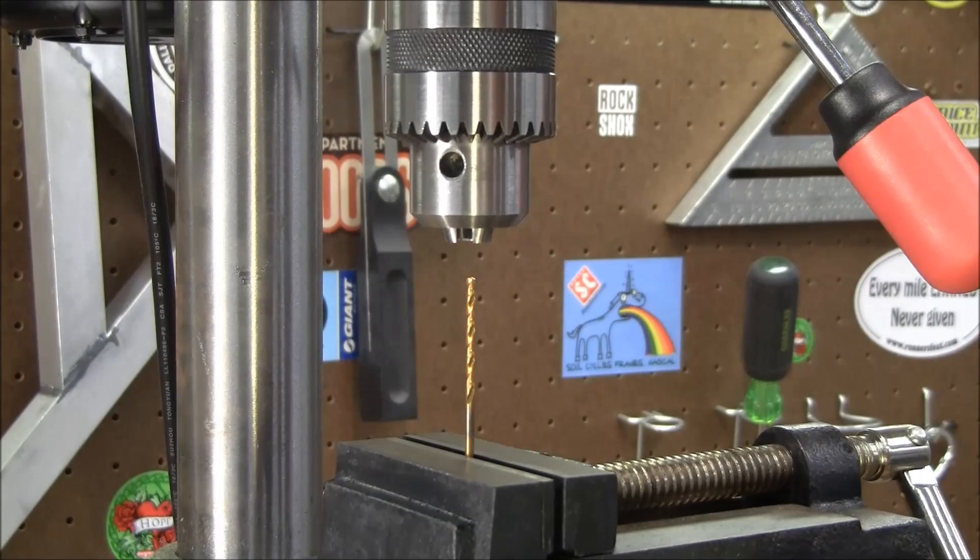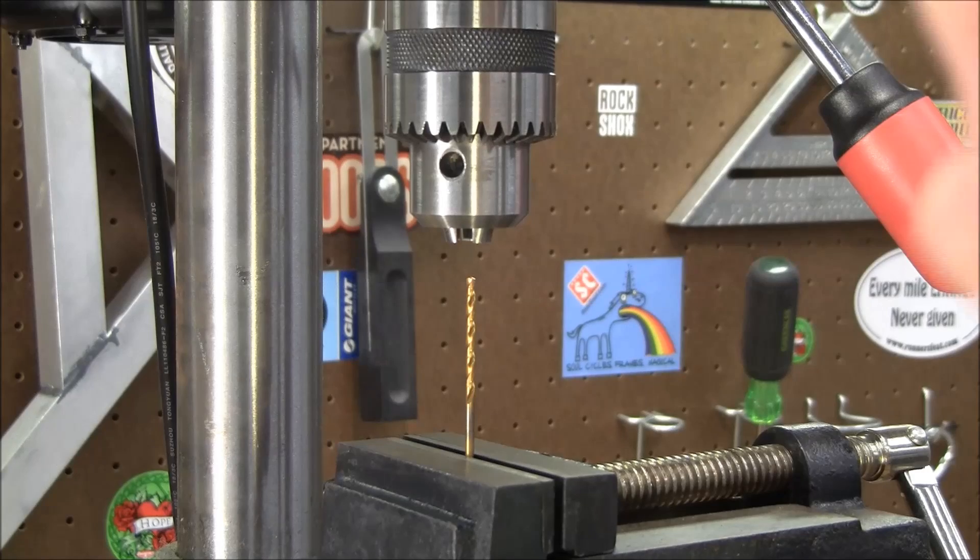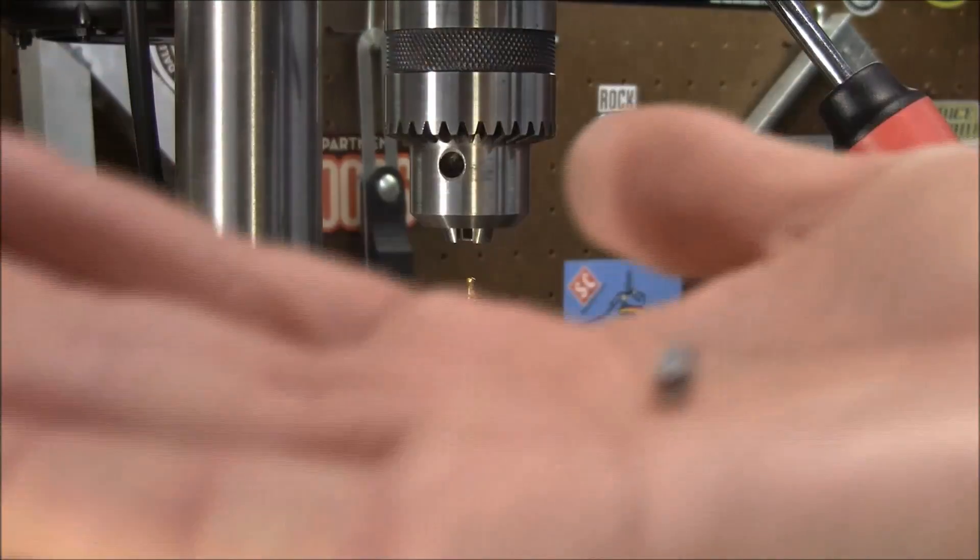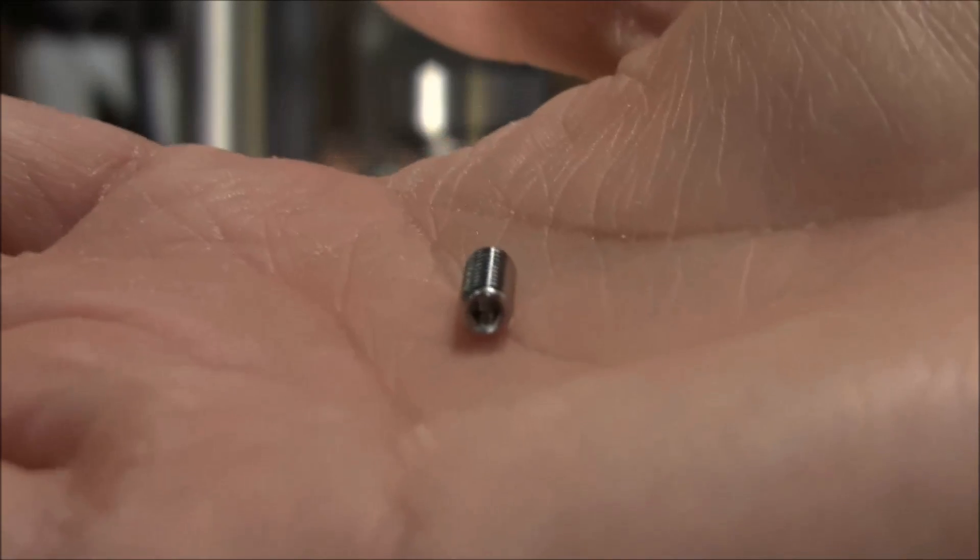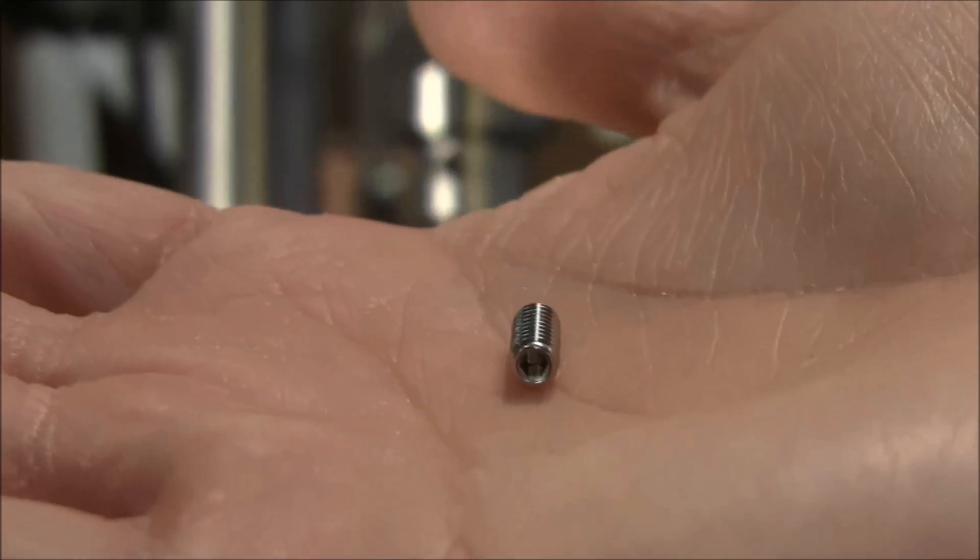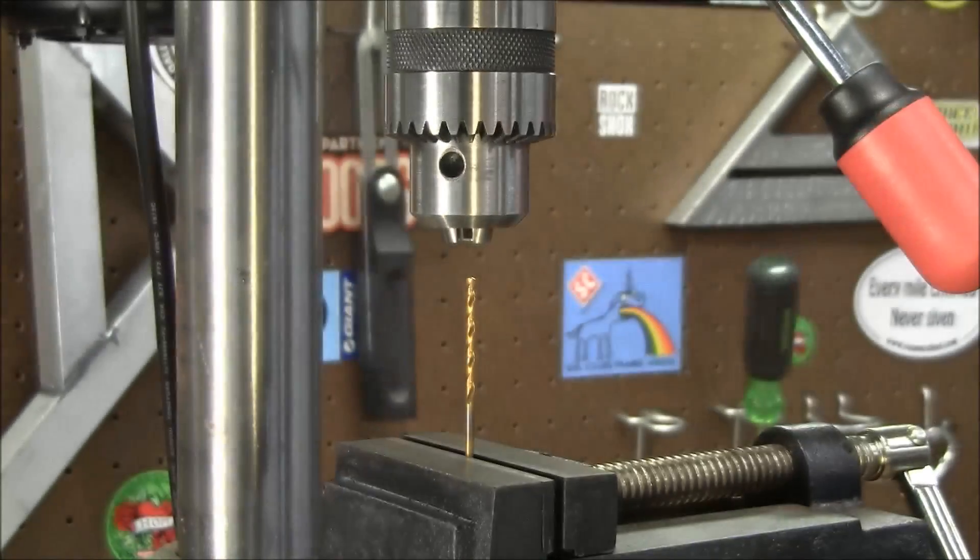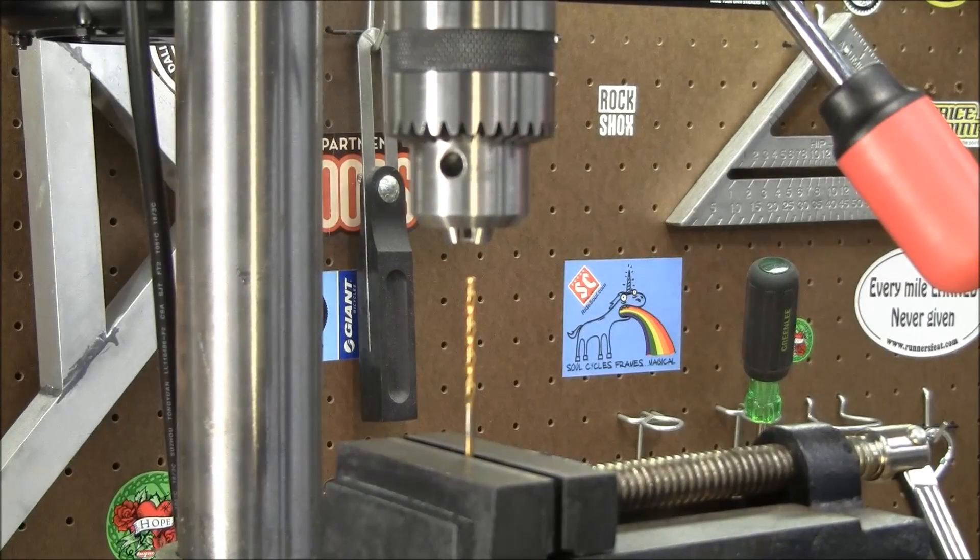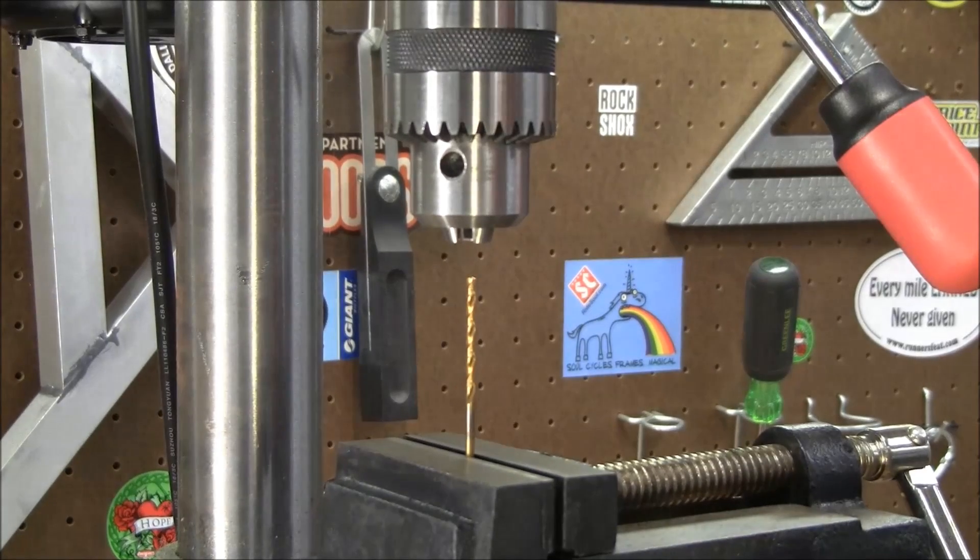Next, we're going to drill a 3 32-inch hole halfway through the set screw starting from the top. The previous hole we put in was all the way through the set screw. This one's going to go about halfway. I've already set up the bit and the vise, just like we did for the previous step.